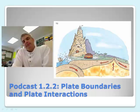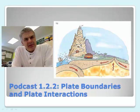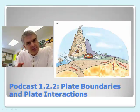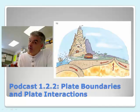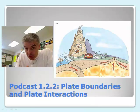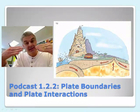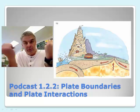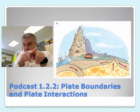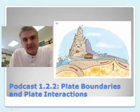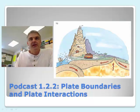So what kind of plate boundaries and plate interactions occur? We've learned about the fact that there are plates, we've learned that the plates move, but there are actually different kinds of interactions. They can come together, they can go apart, and they can slide past each other. What happens at the plate boundaries?